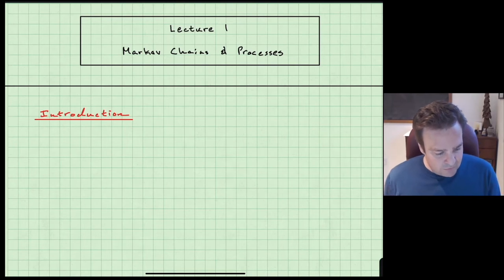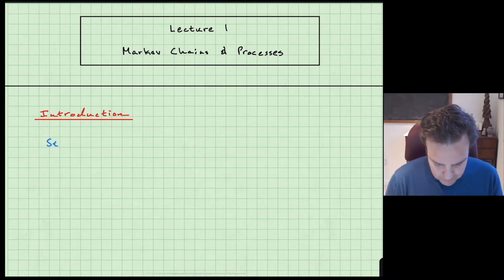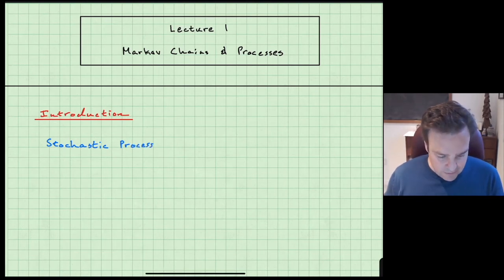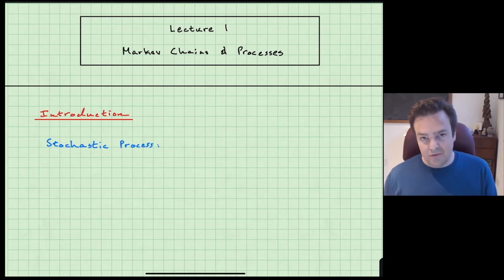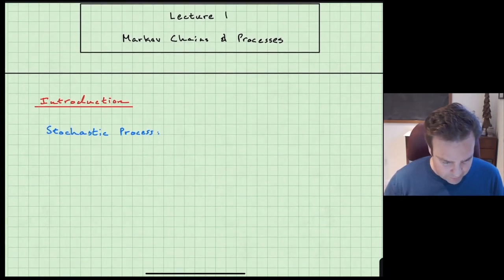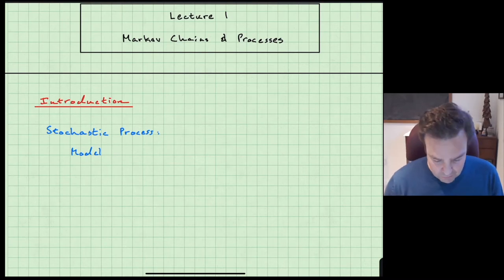The first thing I want to do is introduce a couple of terms and make some crude definitions. I want to define a stochastic process. As you've probably seen, this is the title of the book that this module is largely based on. A stochastic process is a model for a random system evolving in time.